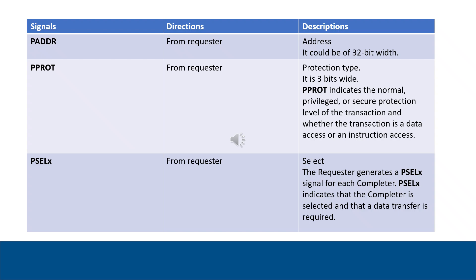The next signal is PSEL — also generated from the requester. It is the select signal. The PSEL signal indicates whether the completer is selected or not. The requester generates a PSEL signal for each completer.